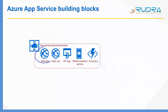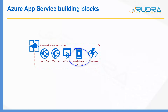Basically, you can host web applications, web jobs (in other words, batches), APIs, and mobile back-end services that can be consumed from your mobile front-end. You can also host Azure Functions.